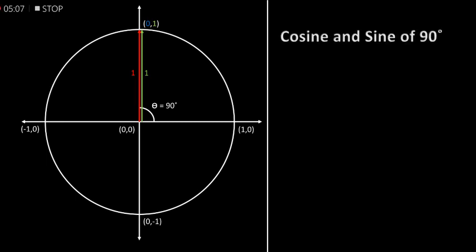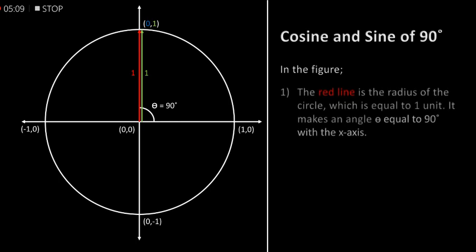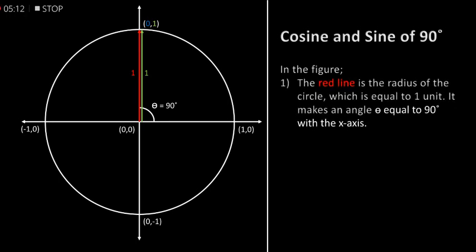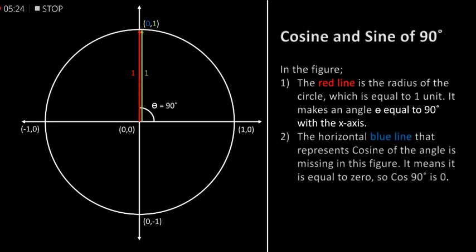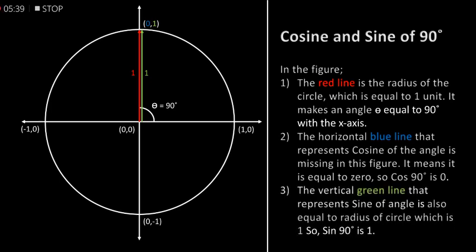Cosine and sine of 90 degrees. In the figure, the red line is the radius of the circle which is equal to 1 unit. It makes an angle theta equal to 90 degrees with the x-axis. The horizontal blue line that represents cosine of the angle is missing in this figure — it means it is equal to 0 — so cos of 90 degrees is 0. The vertical green line that represents sine of the angle is also equal to the radius of the circle, which is 1, so sine of 90 degrees is 1.